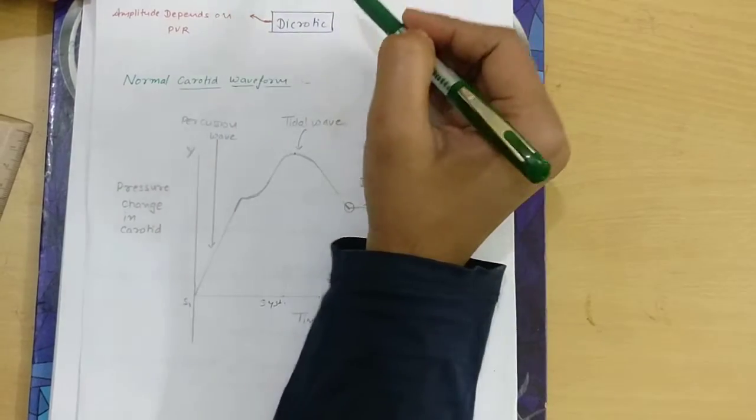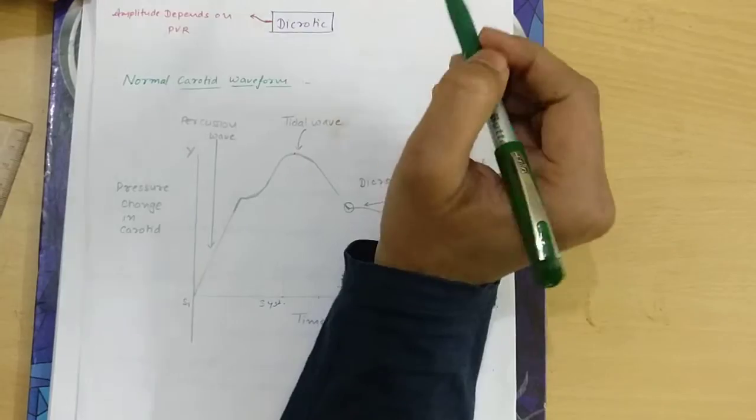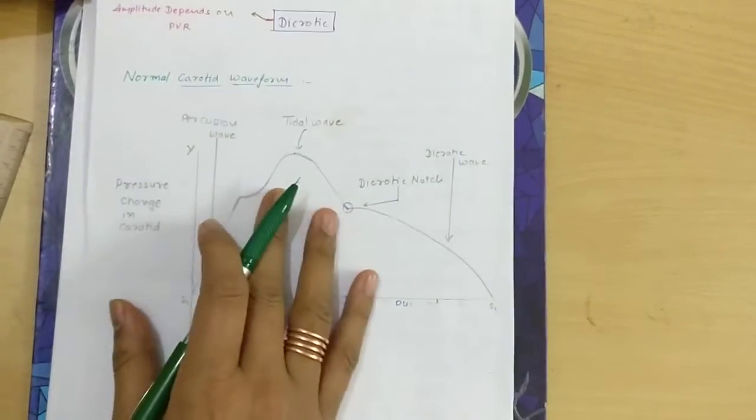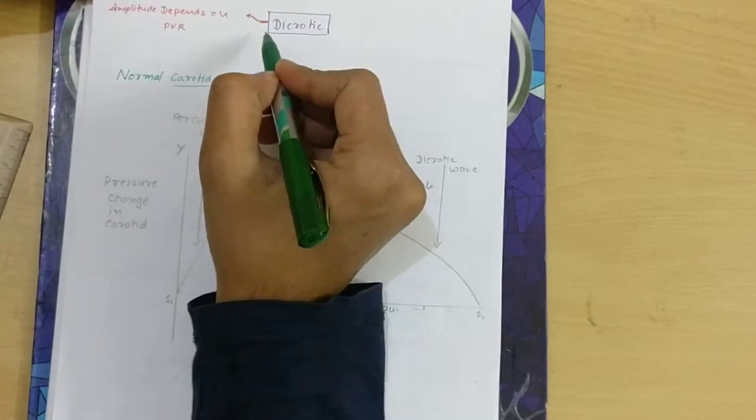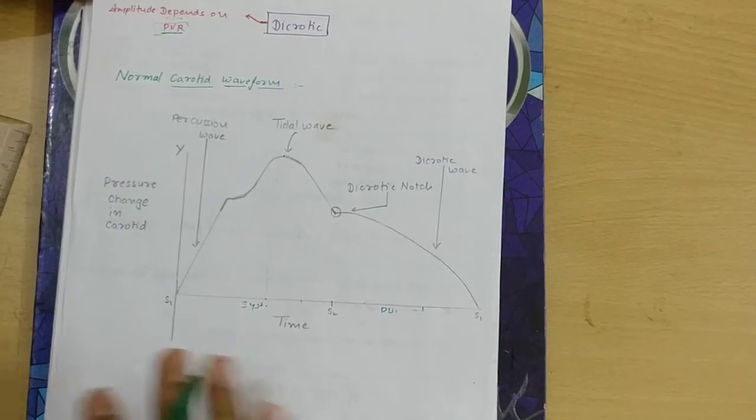Third one is dicrotic wave, which is produced by back pressure reflection into the carotid by the small vessels. Dicrotic wave directly depends on the peripheral vascular resistance.